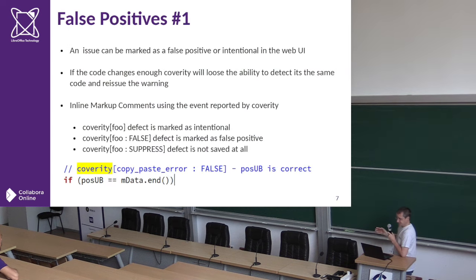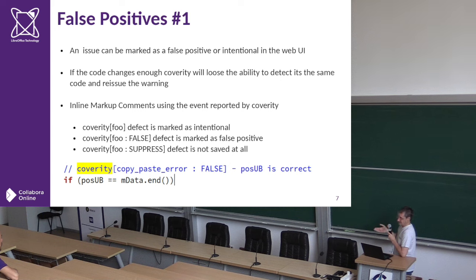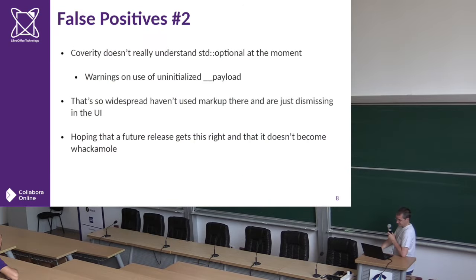Coverity is not perfect. You can annotate code to get Coverity to ignore it for various reasons. There are three patterns: Coverity is correct in what it reports but it doesn't matter in this case; Coverity is incorrect about this; and you can either have it marked false in the user interface or have Coverity ignore it completely, using the specific markup shown.